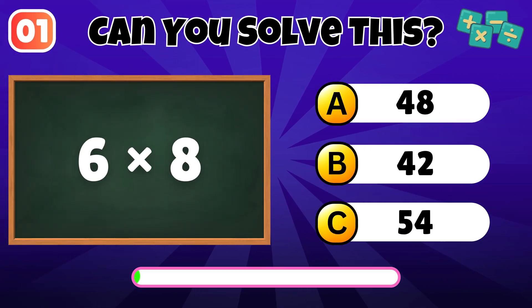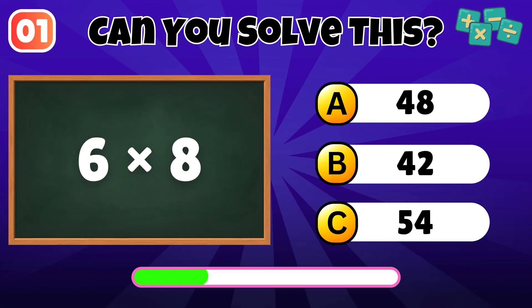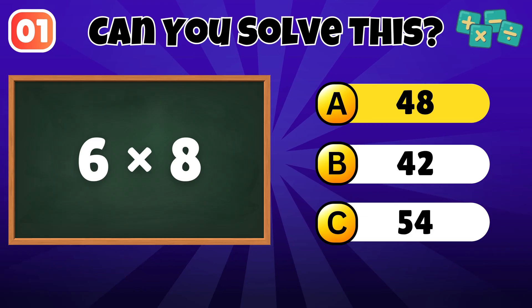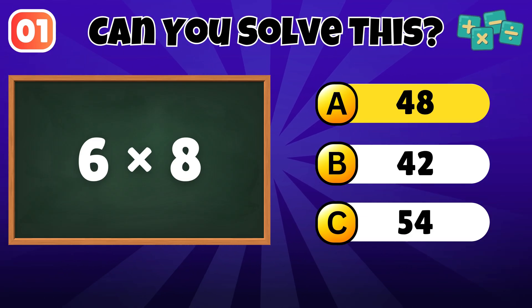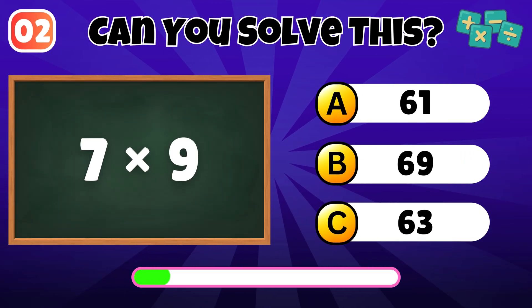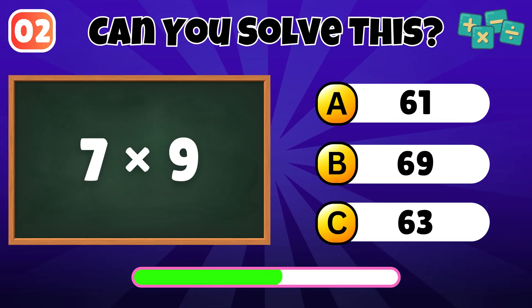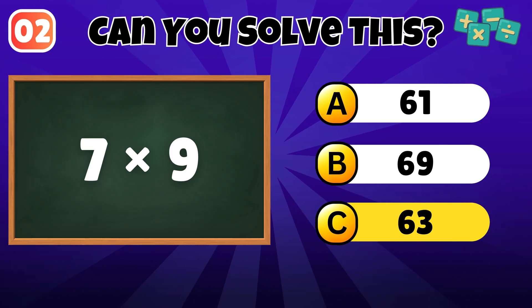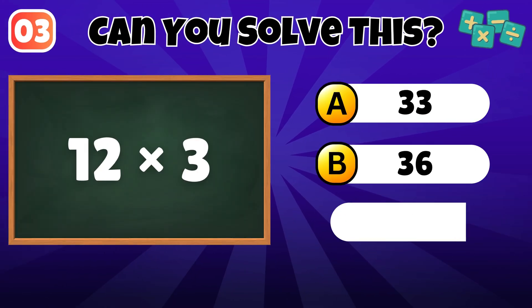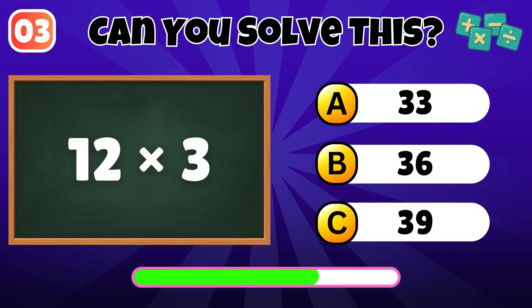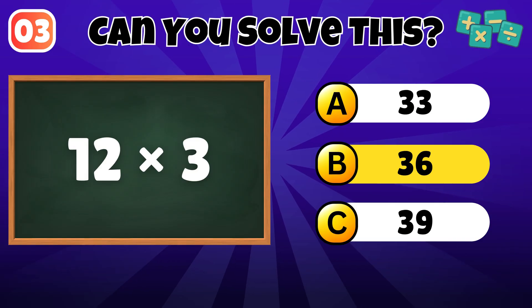What is 6 times 8? The answer is 48. What is 7 times 9? The answer is 63. What is 12 times 3? The answer is 36.